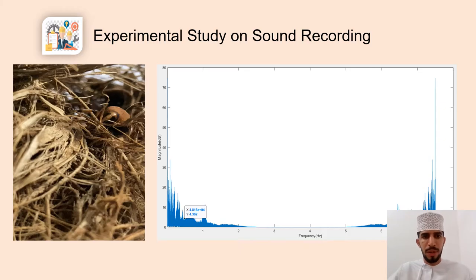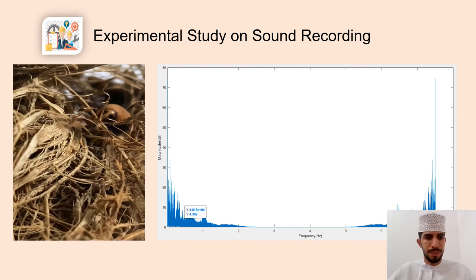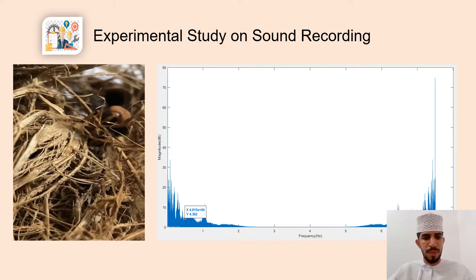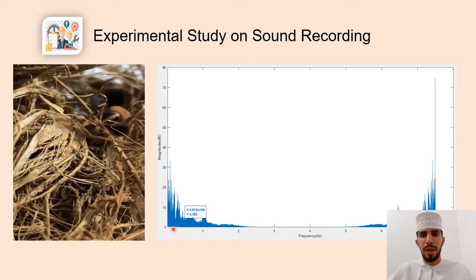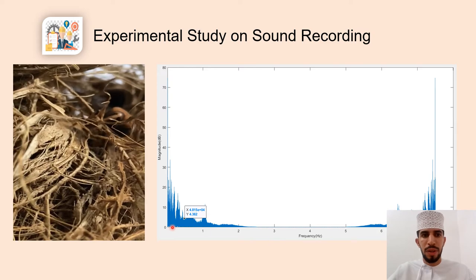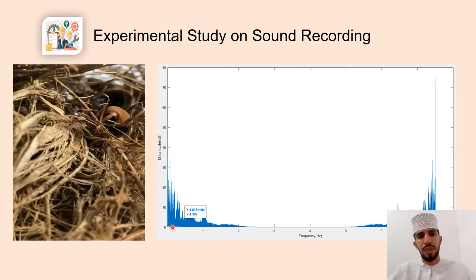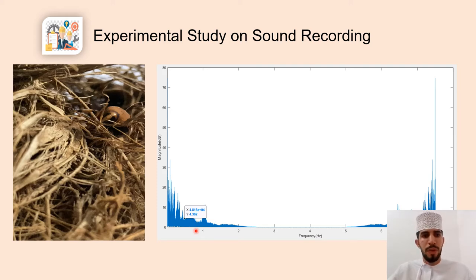We did another experiment for the red palm weevil, which was recording the sound of the red palm weevil when it is eating, as shown in the video. We analyzed the audio clip of the insect in MATLAB using fast Fourier transform to compare the signal in the frequency domain. We obtained a signal in the range from 10 to 90 kHz, which corresponds to the frequency of weevil sounds reported in the scientific literature at 44.1 kHz.